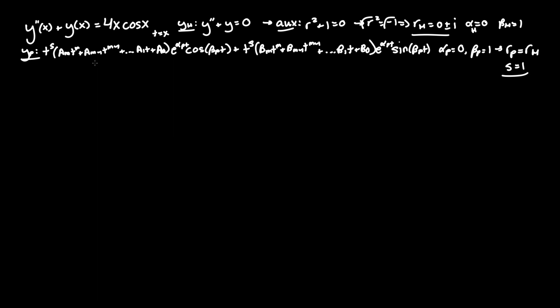Unfortunately, r_particular equals r_homogeneous, which means s = 1. So we bring everything up by a power of t, making t^s = t. Additionally, there is an x (or t) term being multiplied by the right-hand side, so m = 1 as well.